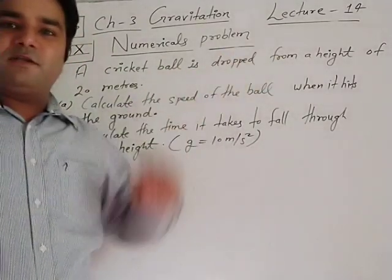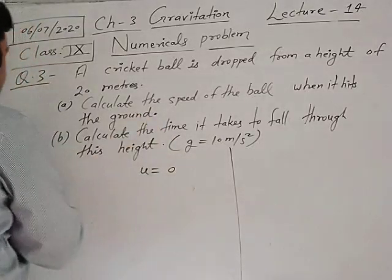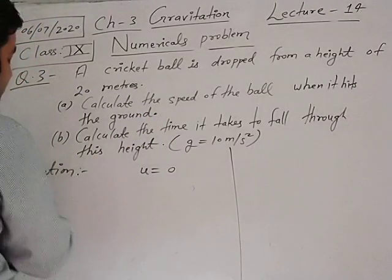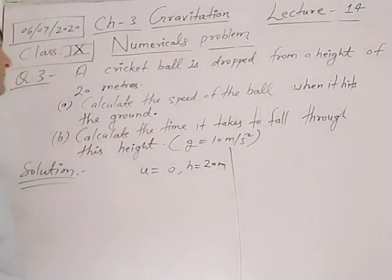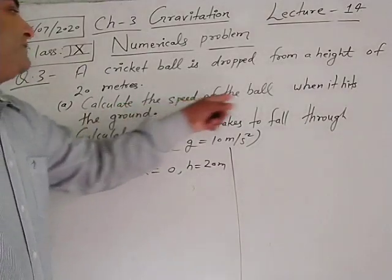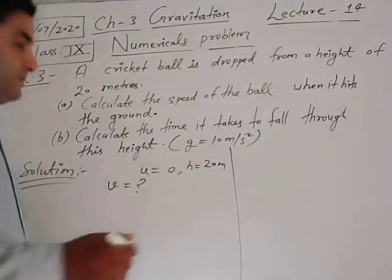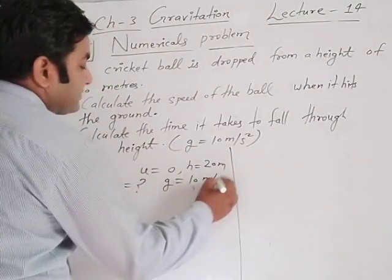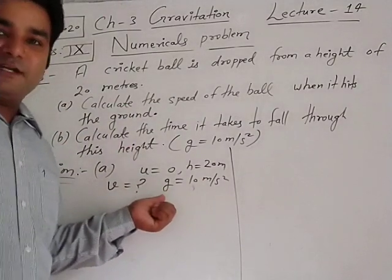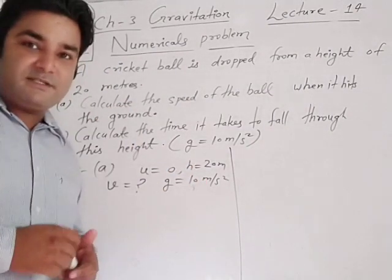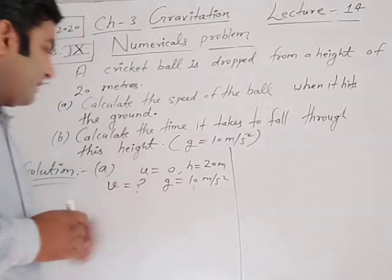A cricket ball is dropped from a height — so initial velocity U equals 0. The height is 20 meters, so H equals 20 meters. We have to calculate: first, the speed of the ball — means we find V. Small g is given as 10 meter per second square. Since time is not given, the second equation is not applicable. We use the third equation of motion, where g replaces A and H replaces distance.